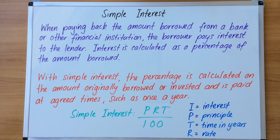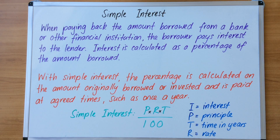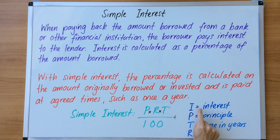The rule is PRT divided by 100 — that means P times R times T divided by 100. Now we need to understand what these letters actually mean. Looking at I, P, T, R — all these letters will be combined to calculate interest questions.